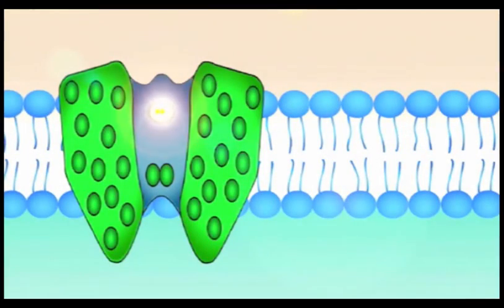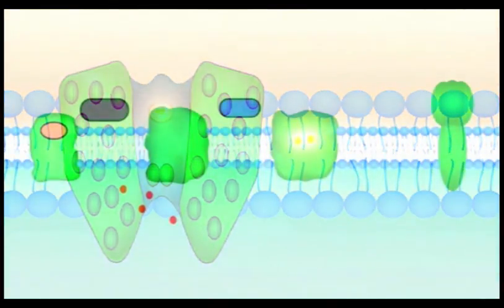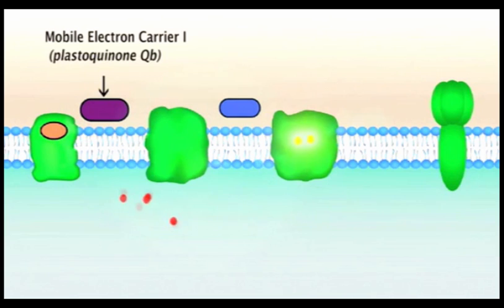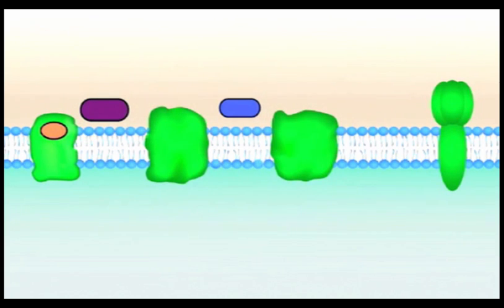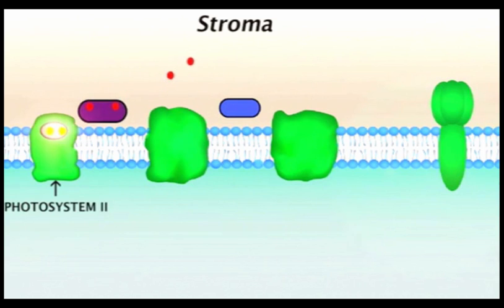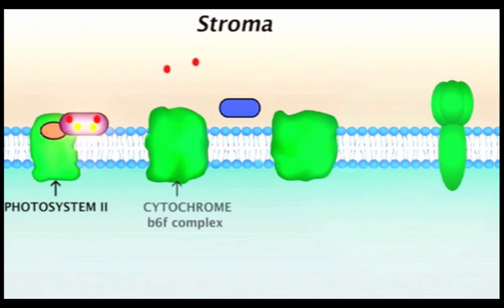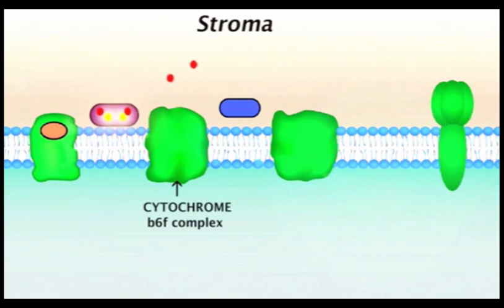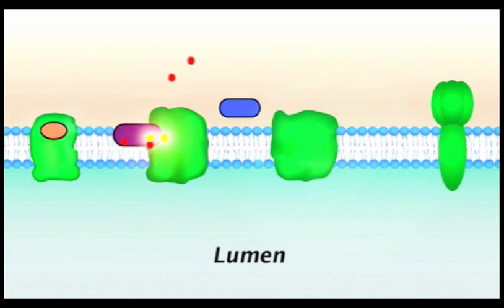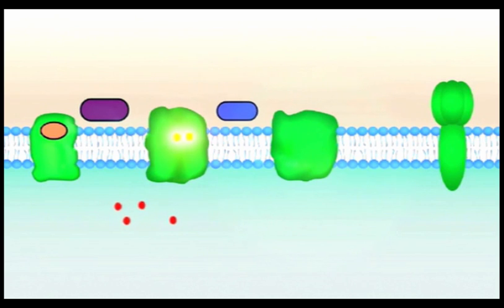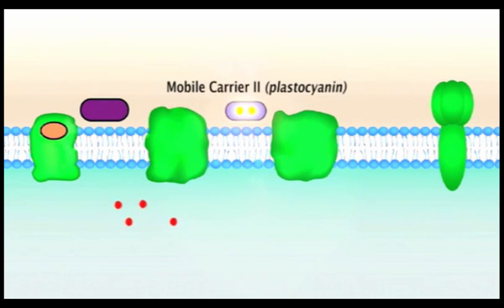The electrons from photosystem II are passed on to a mobile electron carrier molecule known as plastoquinone Qb, which also picks up two protons from the stroma. The carrier transports the electrons to the cytochrome B6F complex and then releases the two protons into the lumen. And from there, the electrons are moved to a second mobile carrier molecule called plastocyanin, which carries them to photosystem I.